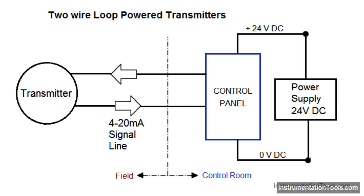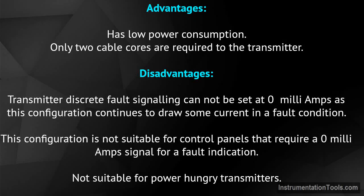Two-wire loop powered transmitters. This configuration supplies power and the 4 to 20 milliamp signal over a two-wire loop connection between the transmitter and the control panel. Not all transmitters can be wired in this format; they must be specifically designed to accommodate this configuration. Advantages: low power consumption, and only two cable cores are required to the transmitter.